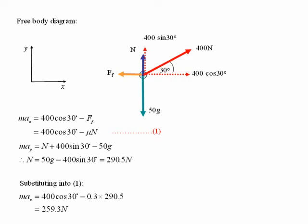This gives us 259.3 newtons. Dividing through by the mass of our crate gives us our final acceleration, which is 5.185 meters per second squared.